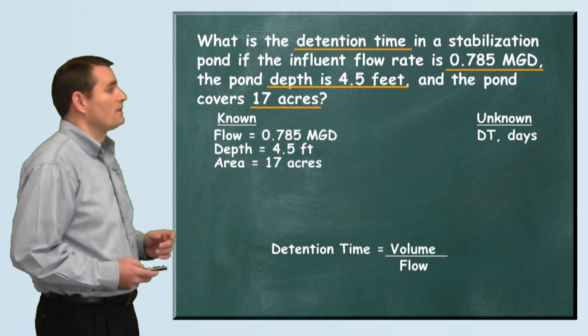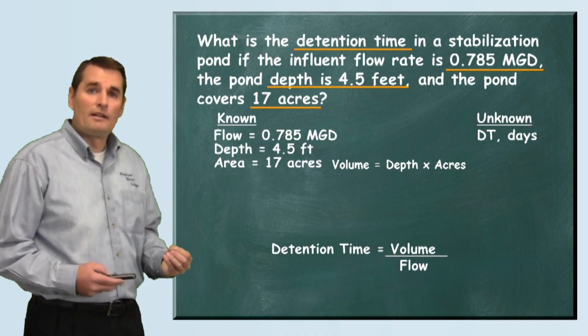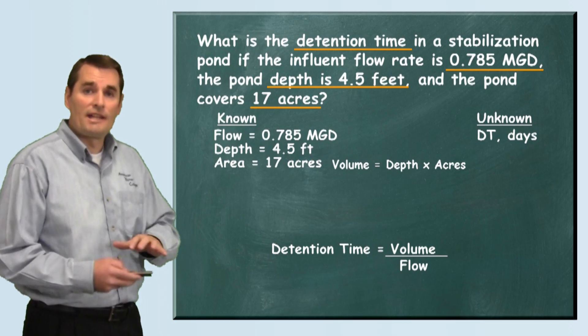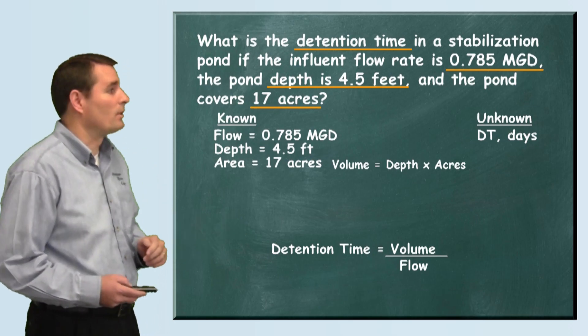The first thing we're going to want to do is determine the volume. We're going to take the depth of this pond in feet and multiply it by the acres, the area that it covers, to find out how many acre-feet are in this pond.